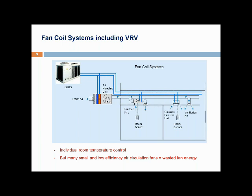Fan coil systems — whether chilled water fan coil or fan coils using refrigerant like VRF — operate similarly: one uses chilled water and the other uses refrigerant to distribute and vary the amount of cooling supplied to the space. They both provide individual room control, but they have a disadvantage: many small terminal units with many small recirculation fans operating at very low efficiencies, which results in wasted fan energy.